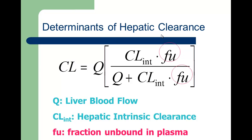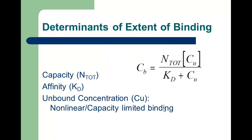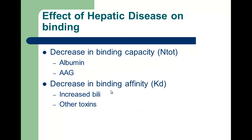The third determinant of hepatic clearance is protein binding — specifically the fraction bound in plasma. Binding is also governed by a Michaelis-Menten-type relationship: capacity, affinity, and concentration. Changes in the amount of binding proteins available, changes in affinity, or changes in drug concentration can all affect binding.